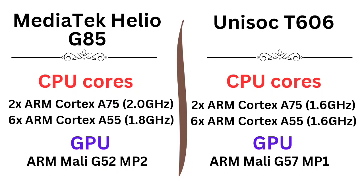Since both SoCs are very similar and both are manufactured at 12nm by TSMC, the only way to differentiate them right now is clock speed. The Helio G85 runs at a maximum of 2.0 GHz compared to 1.6 GHz on the T606, so it's going to perform better.